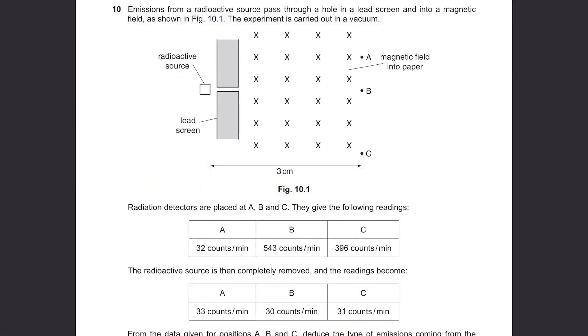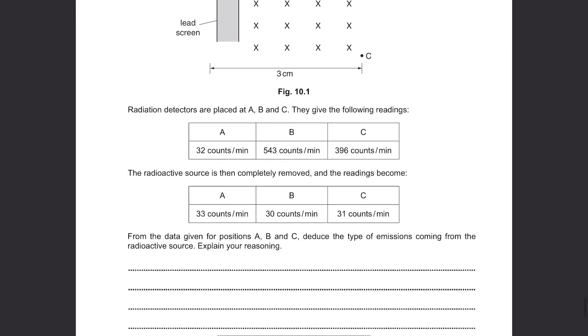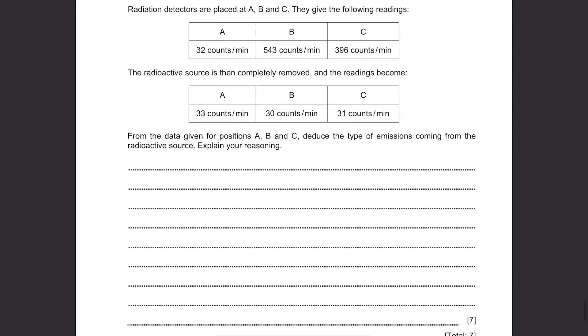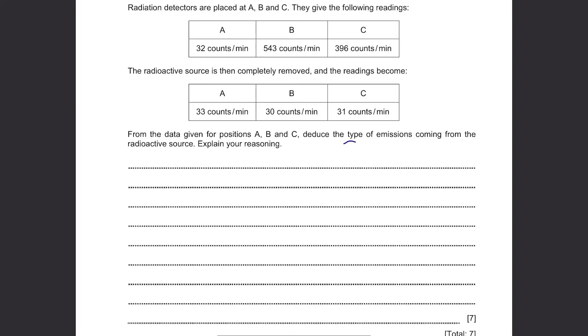Question 10. Emissions from a radioactive source pass through a hole in a LED screen and into a magnetic field as shown in figure 10.1. The experiment is carried out in a vacuum. So the radioactive emission will pass through in this direction and there is a magnetic field going into the paper. Radiation detectors are placed at A, B and C. They give the following readings. The radioactive source is then completely removed and the readings become as shown in this table. From the data given from positions A, B and C, deduce the type of emissions coming from the radioactive source. Explain your reasoning.